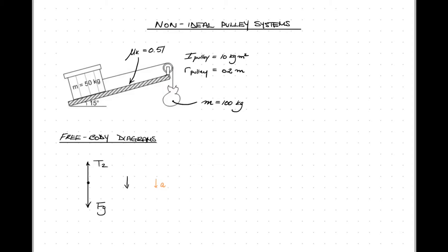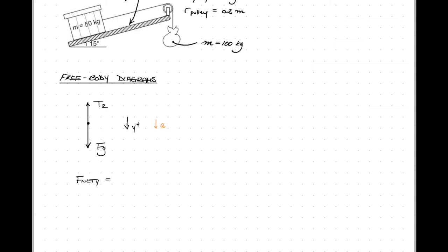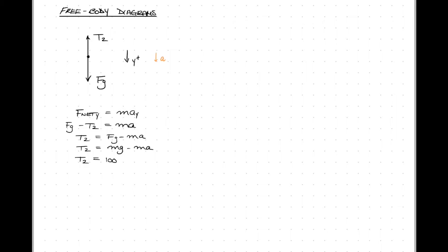So we have T2 pulling the counterweight upwards, and the force due to gravity pulling it downwards. And we assume the direction of acceleration is downwards, so let's call this the positive y-direction. So the sum of the forces in the y is Fg minus T2, and that equals mass times that same A value. We're going to have the block and the counterweight, both accelerating with that A value. Solving for T2 gives 981 minus 10a.